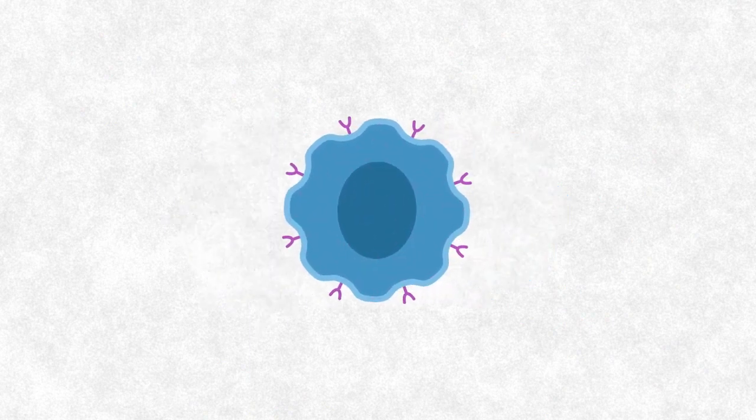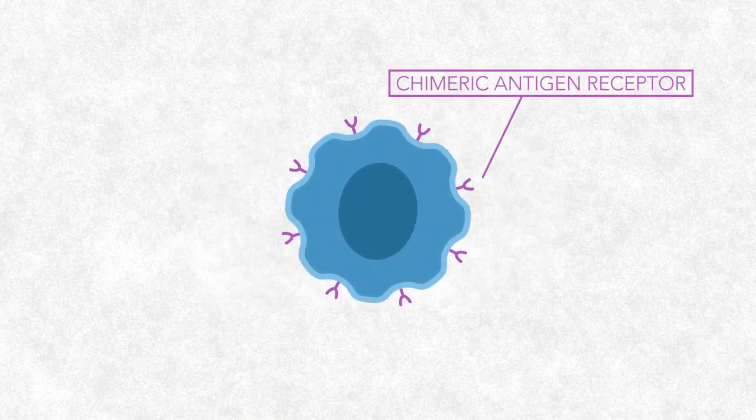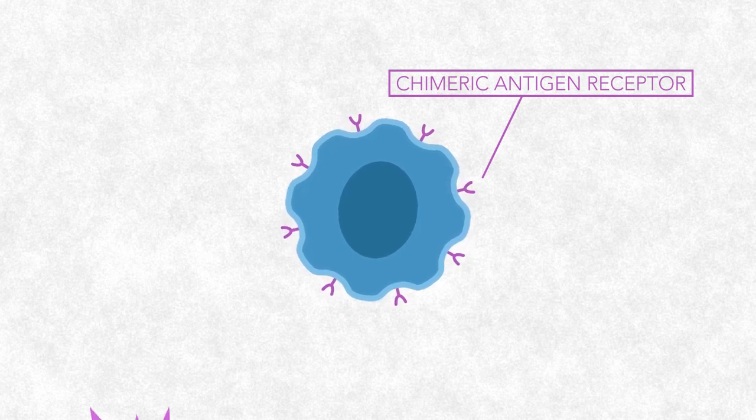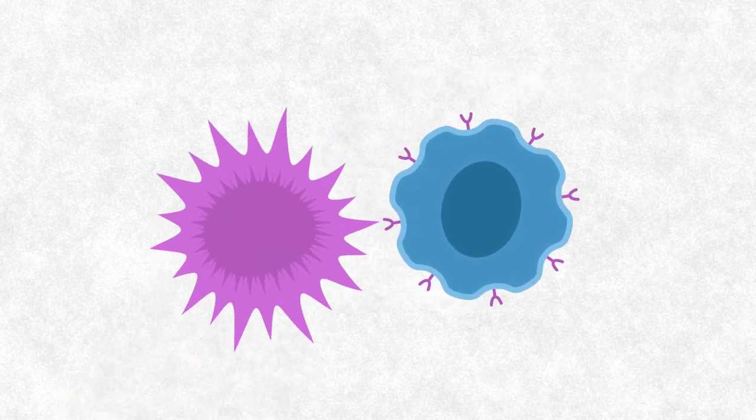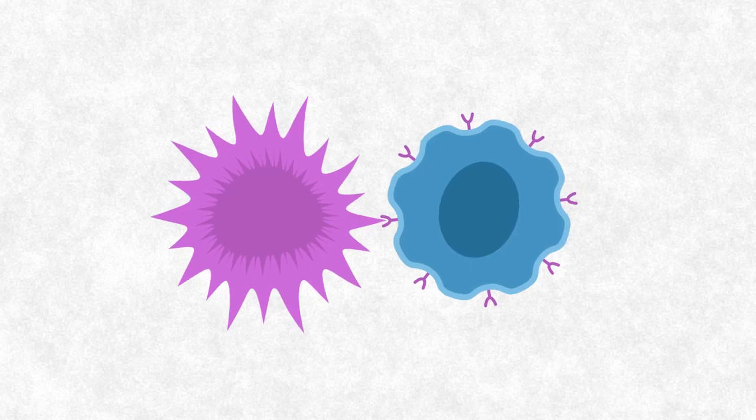That causes the T-cells to grow a special receptor called a chimeric antigen receptor. This empowers them to recognize cancer cells and latch onto them.